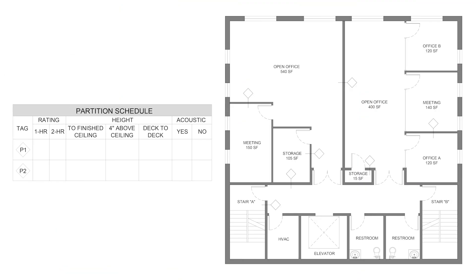Here's an example of a type of question that you might see on the NCIDQ exam regarding fire rated partitions. We're given a floor plan with empty partition tags and need to place the correct tags at the correct wall locations. With this plan we're given our partition schedule that gives us the rating of each wall type. This schedule may also contain additional information like partition heights, acoustic properties, and if the wall goes all the way up to the deck or just to the finished ceiling.